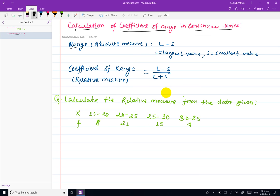The range is the absolute measure, where L minus S equals the largest value minus smallest value. The coefficient of range is the formula: largest value minus smallest value divided by largest value plus smallest value. This is the relative measure.